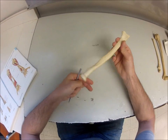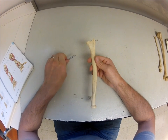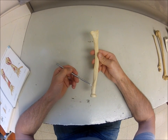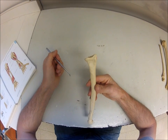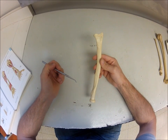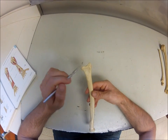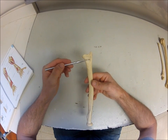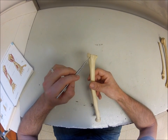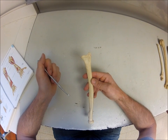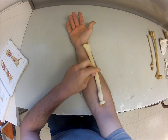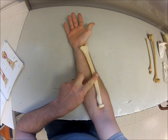To orient the radius, you can look for the radial tuberosity, which points medially, or the styloid process, which points laterally. Looking at the distal end, the anterior side has a depression while the posterior side has those ridges and valleys. Putting those features in their proper positions, this particular radius would sit on this side — it's a right radius.